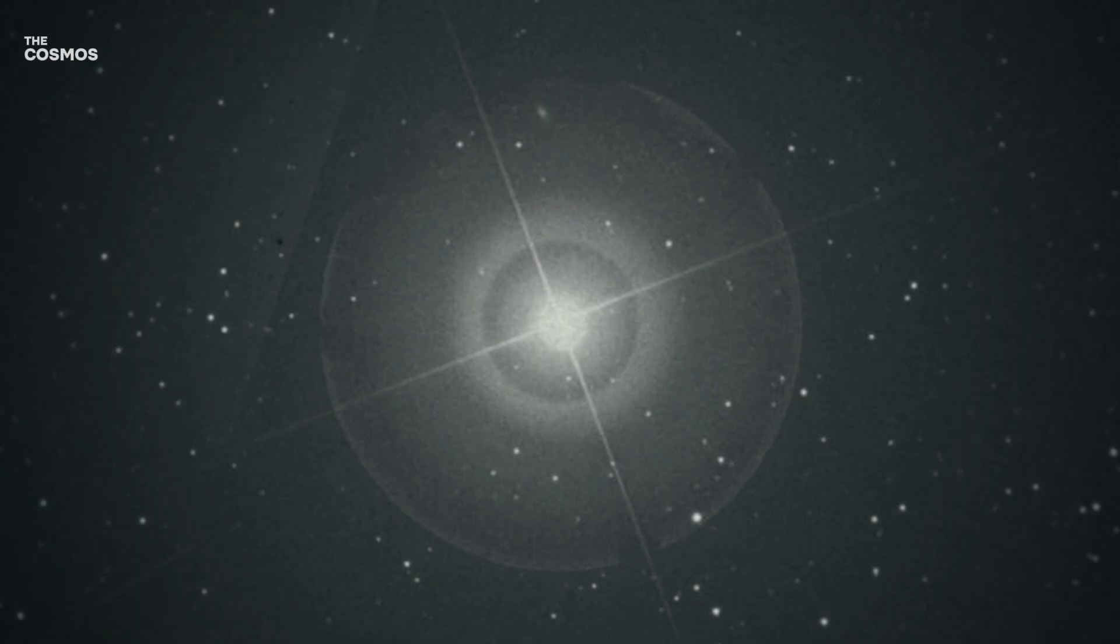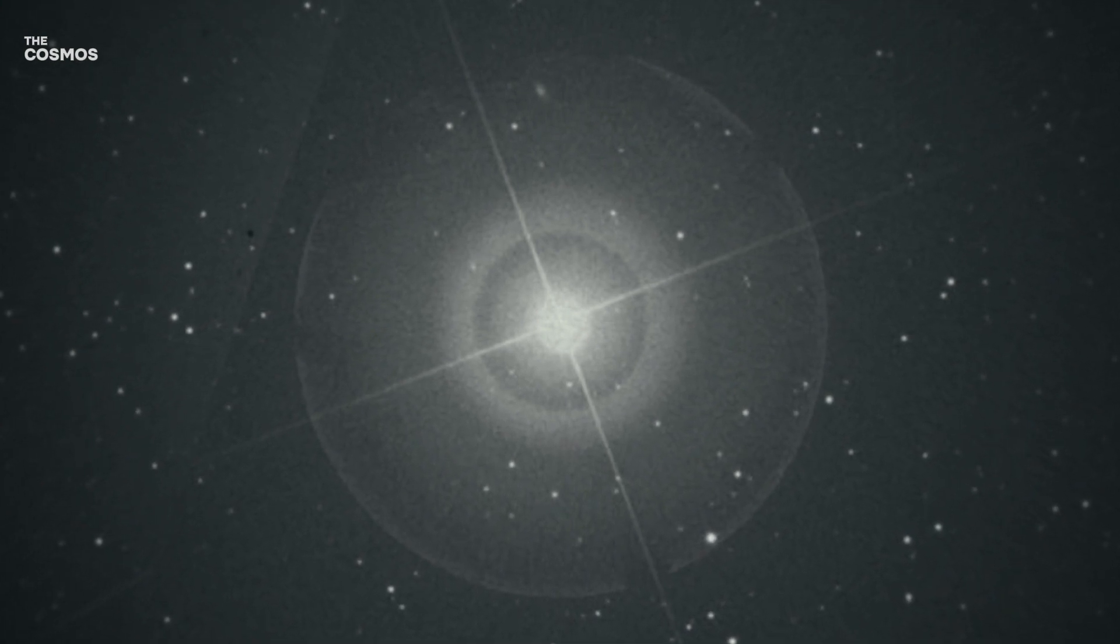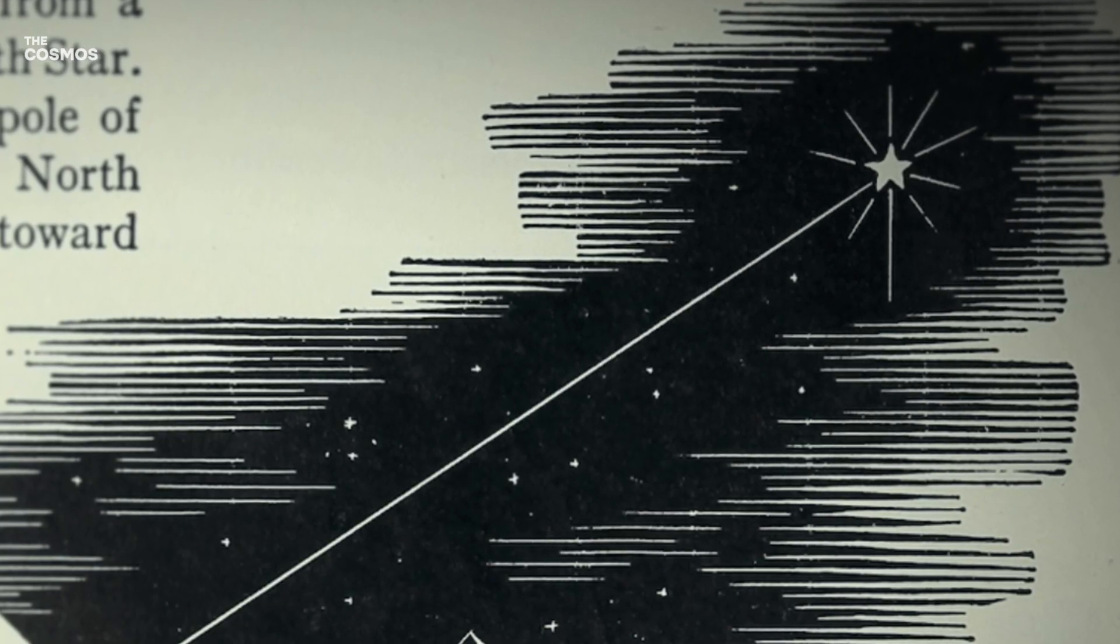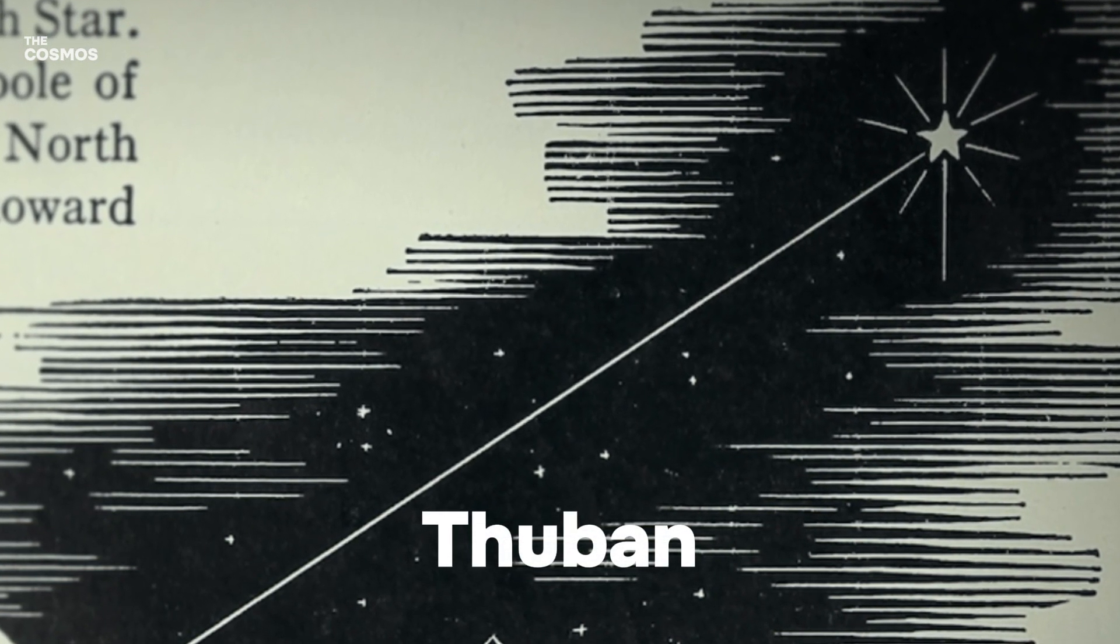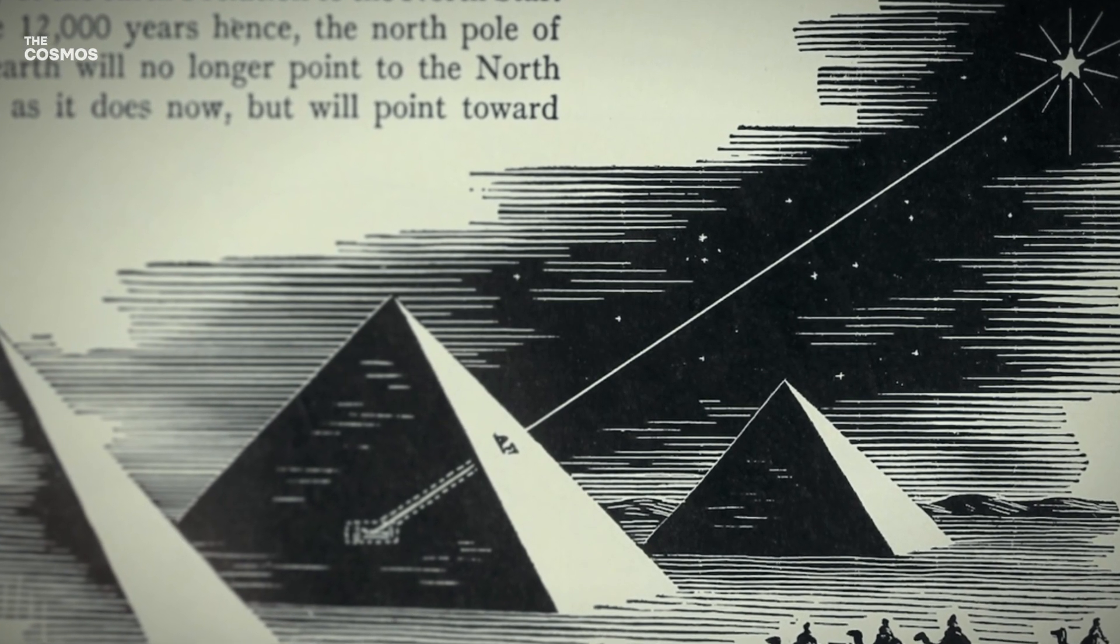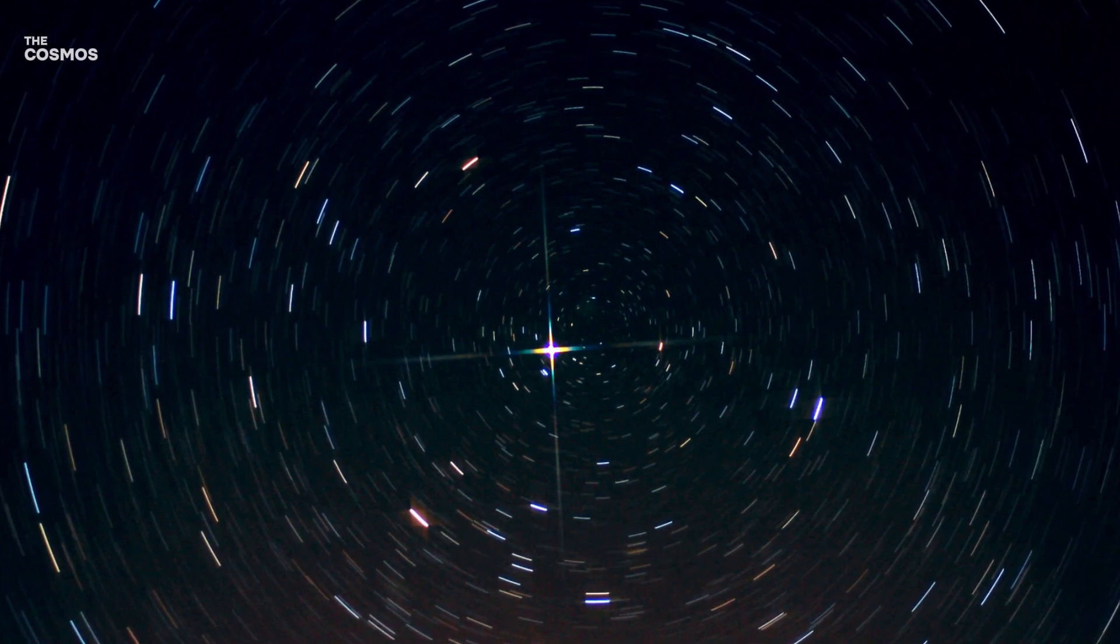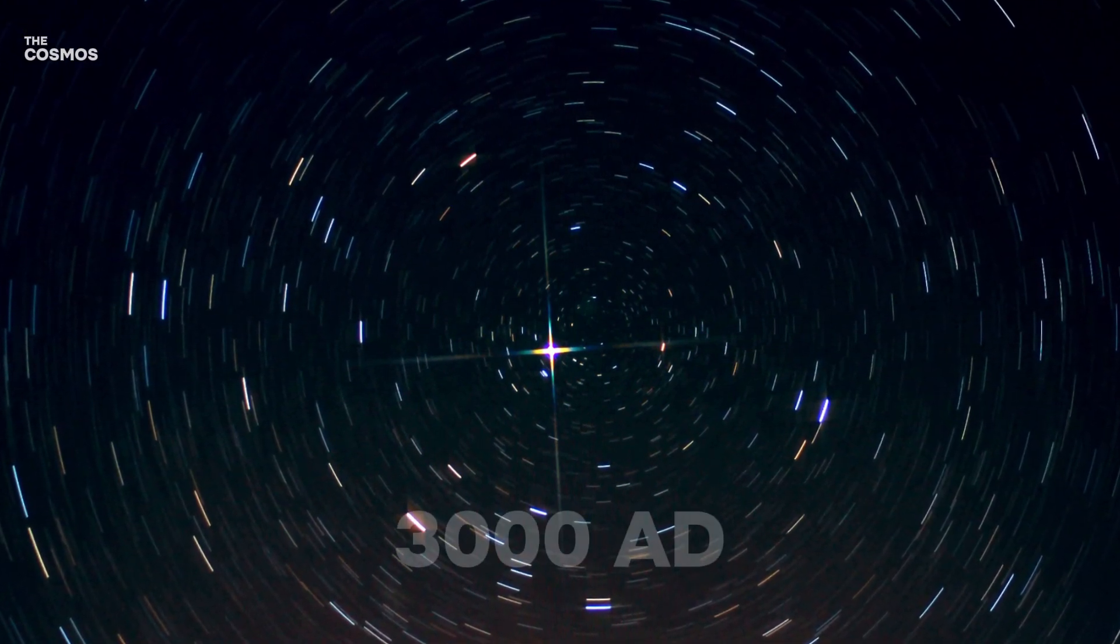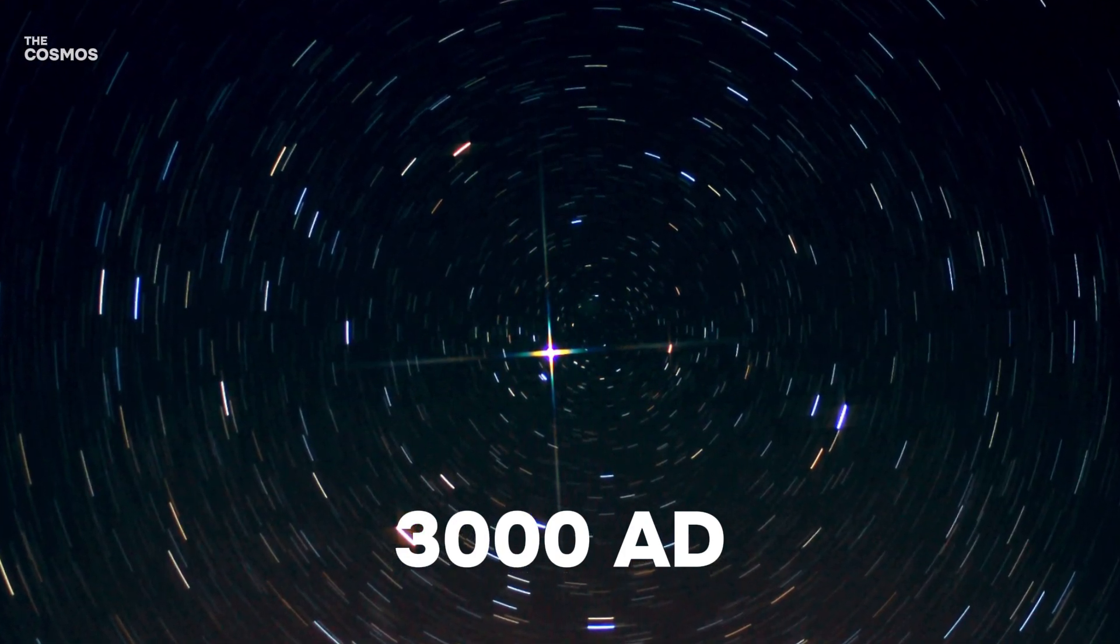The story of the North Star is not static. It has evolved over time. Around 3000 BC, the faint star Thuban held the position of the North Star, witnessing the construction of the Egyptian pyramids. Polaris ascended to its current status around 500 AD and will continue to hold its place near the celestial pole until around 3000 AD, despite the gradual drift caused by Earth's precession.